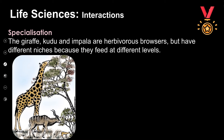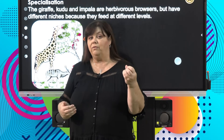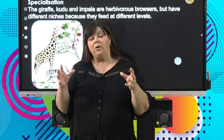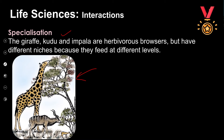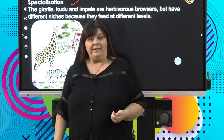Another example: a giraffe, kudu, and impala all eat leaves off the same tree. We could see that this would result in competition, but competition is avoided because they undergo specialization. We can clearly see they're eating at different levels, so they're exploiting different niches.